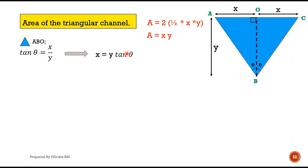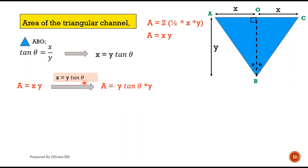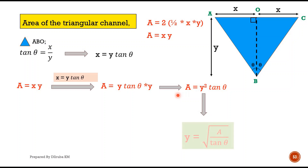Applying x = y·tan θ into the area equation, the area becomes A = y·tan θ × y = y²·tan θ. So we have the equation for area: A = y²·tan θ. From this equation we can write y = √(A / tan θ). Let us keep this as equation number one.